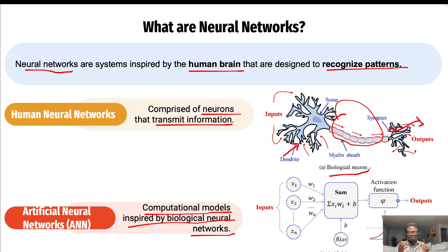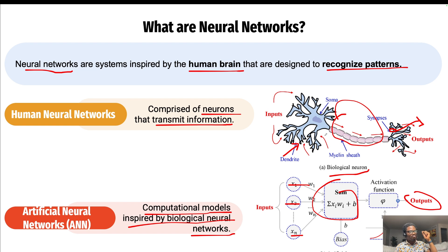For artificial neurons, you have neuron inputs x1 through xn, then it does some calculations, introduces some bias, and we get the output. You don't need to worry about all these calculations because the models will take care of it. I'm just showing you what a biological neuron looks like — which is what you have in your head — and what an artificial neuron looks like, which is what we use in models like ChatGPT and other large models.